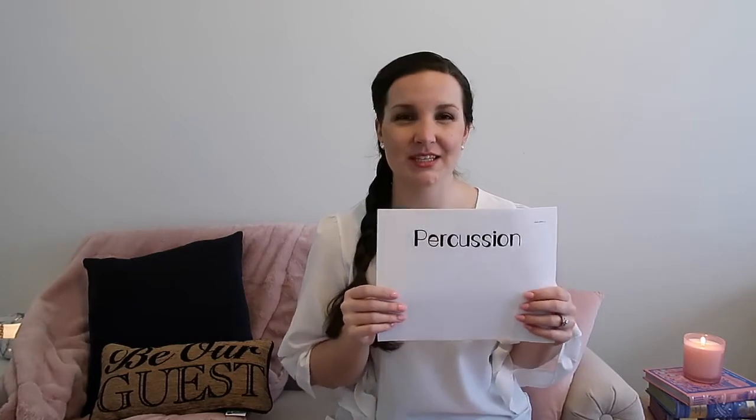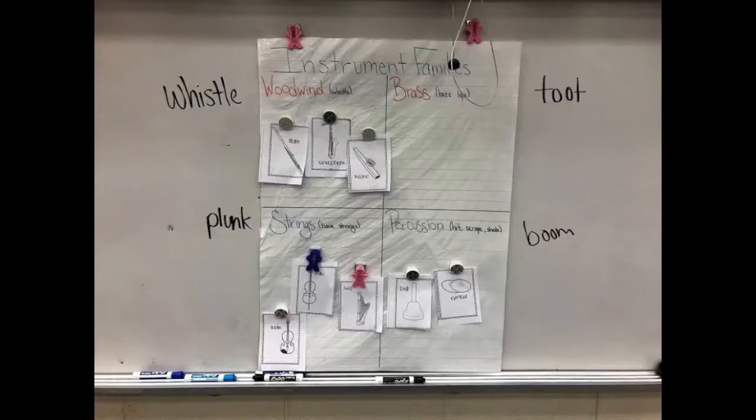First off, I take some posters that say the different instrument families on them — so woodwind, brass, strings, and percussion — and I spread these out on the floor or on the board. Alternatively, you could make an anchor chart that has the four instrument families on it, and that would also work.